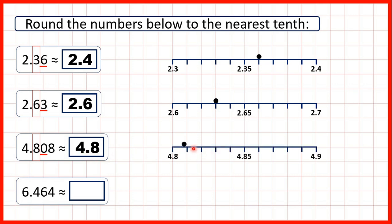So 4.808 rounds to 4.8. We can see on a number line that 4.808 is closer to 4.8 than it is to 4.9, so we're rounding down. We can also see on this number line that 4.808 is between 4.8 and 4.81.